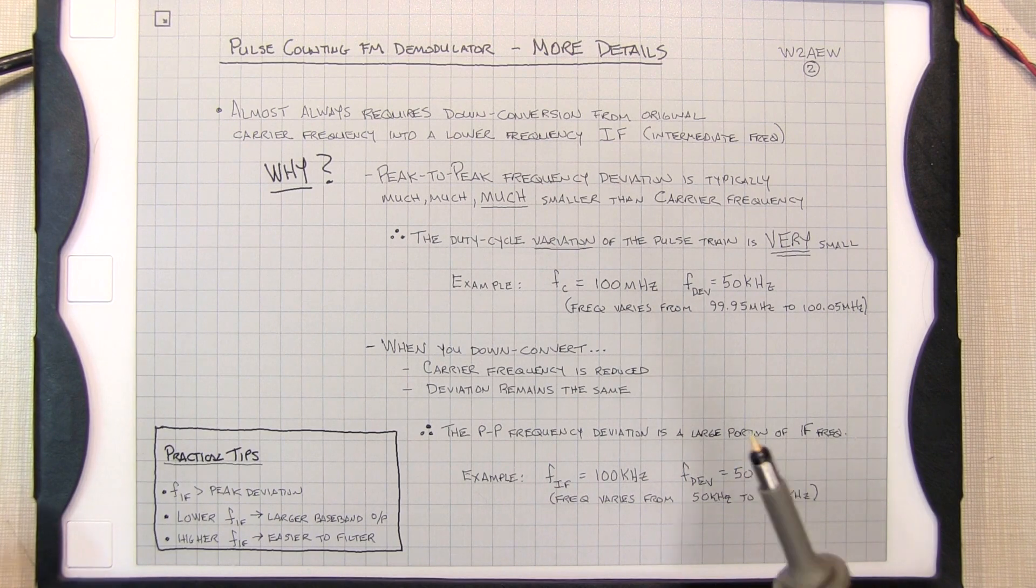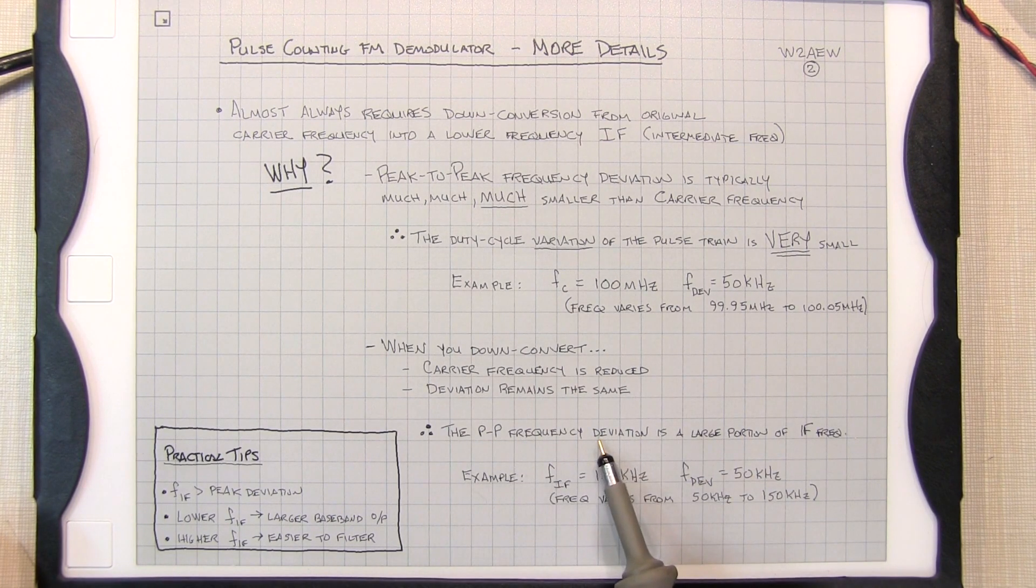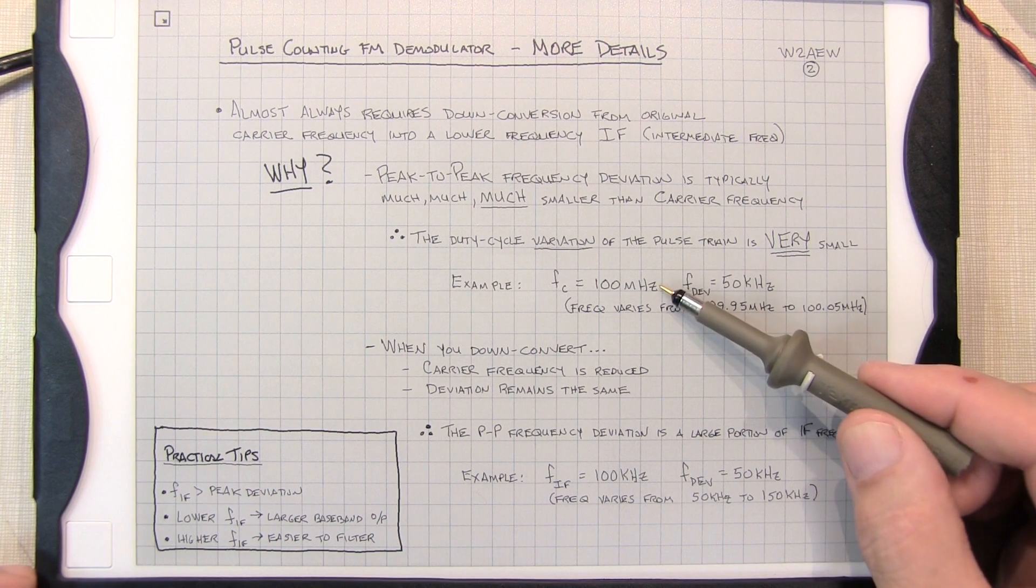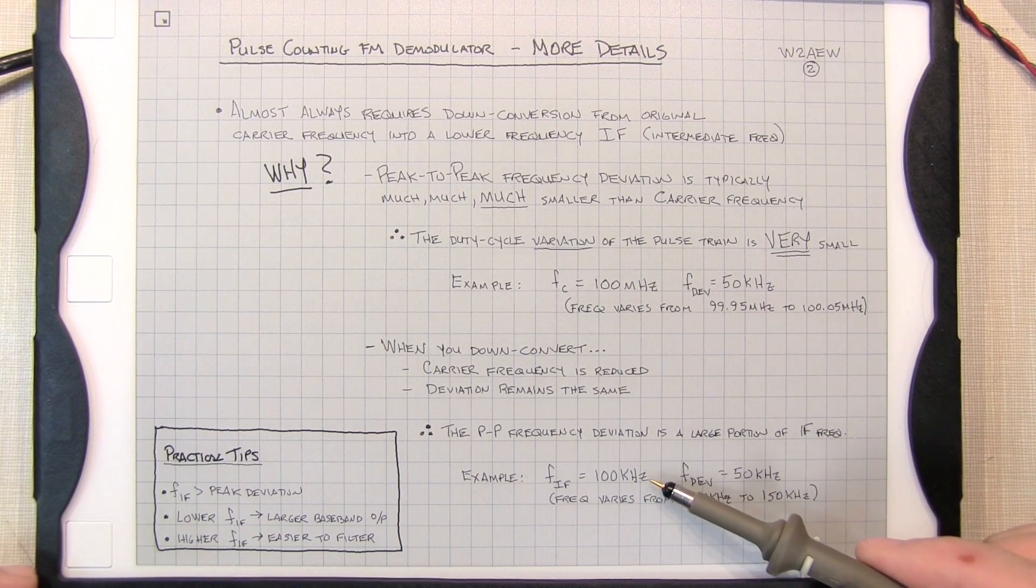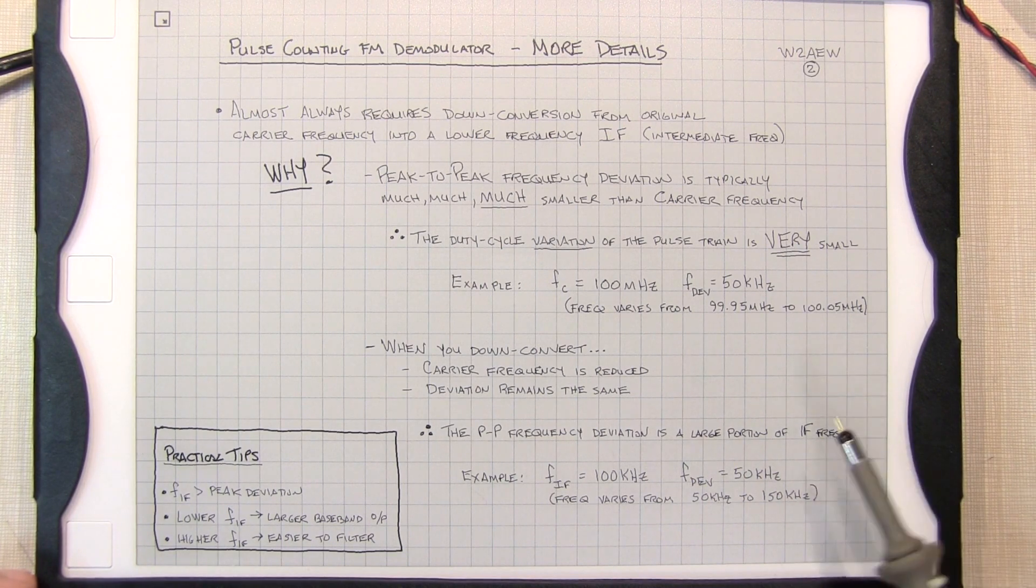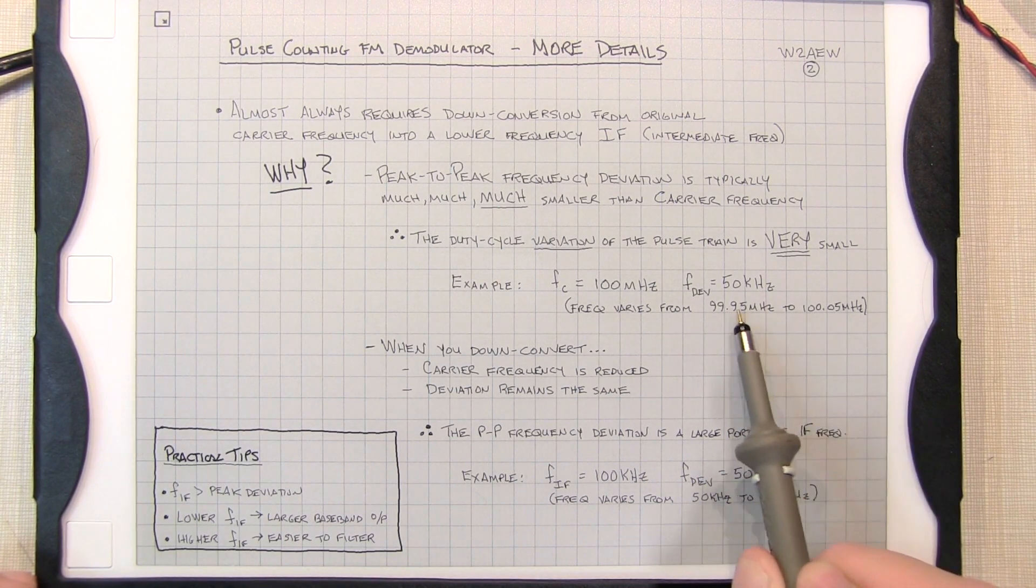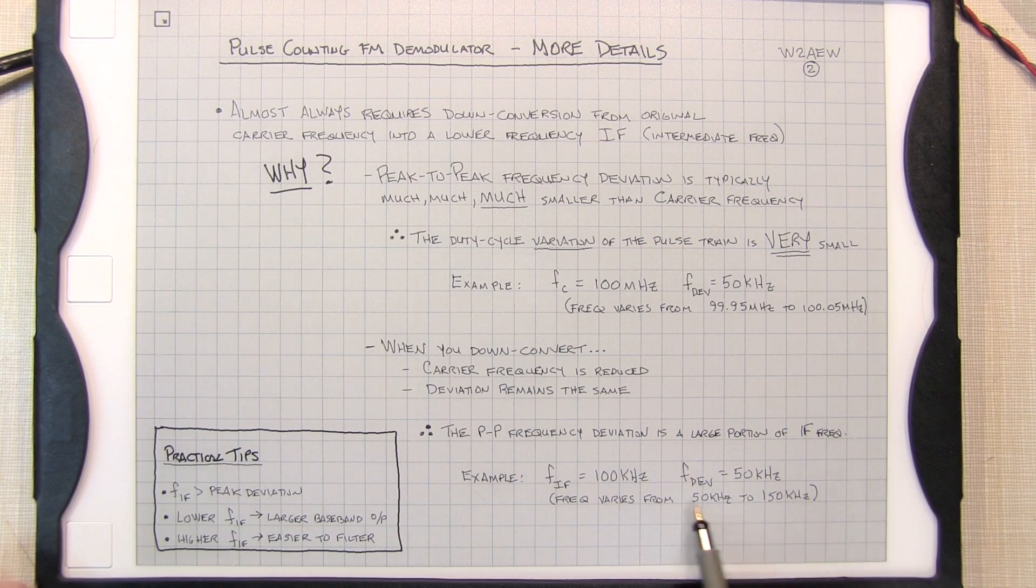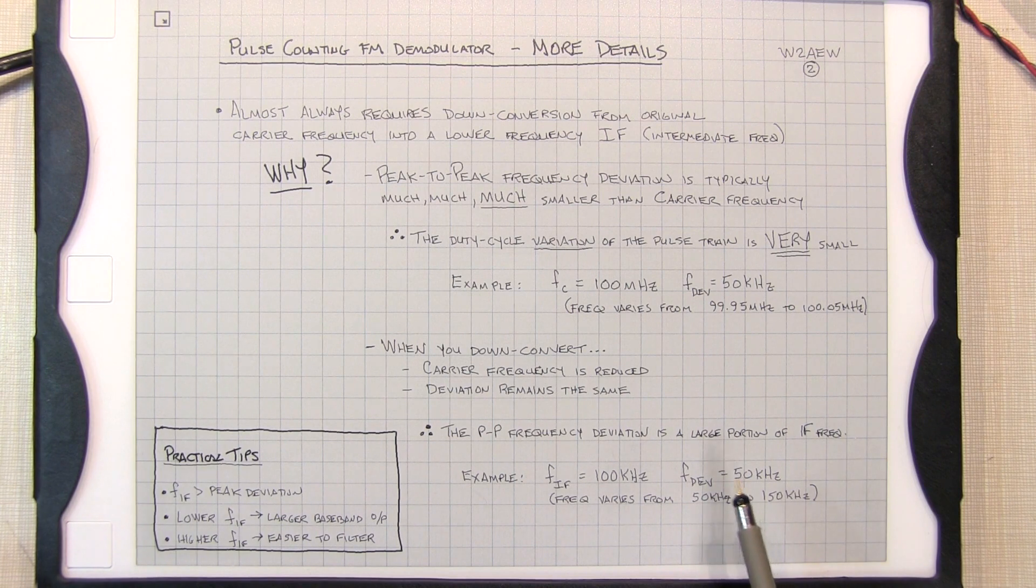So how does this help the situation? Well now the peak-to-peak frequency deviation is going to be a much larger portion of that IF frequency. So for example, if we down convert it from 100 megahertz down to 100 kilohertz, the deviation will still be the same plus or minus 50k. So now instead of the frequency varying this very small amount with respect to the carrier frequency, the frequency is going to vary from 50 kilohertz to 150 kilohertz. That's a three to one variation in that frequency, very easy to see and observe, and therefore this pulse counting technique will work really well.